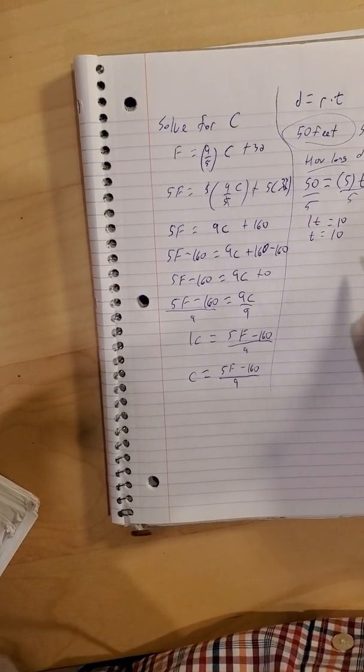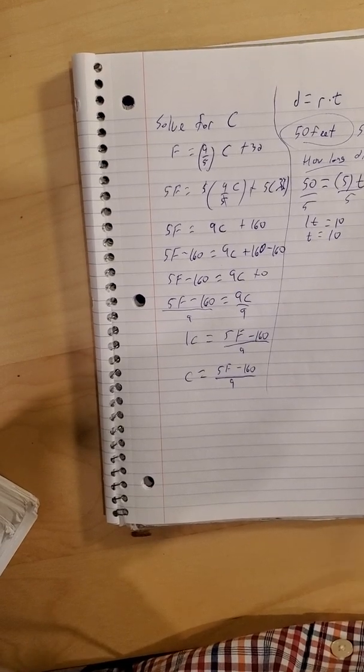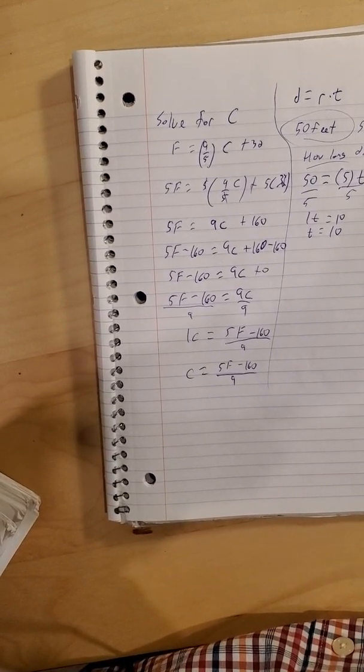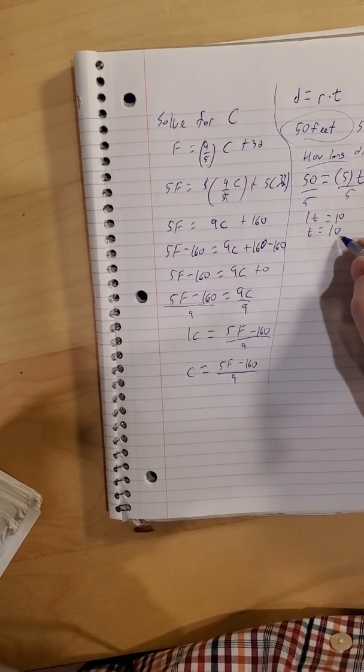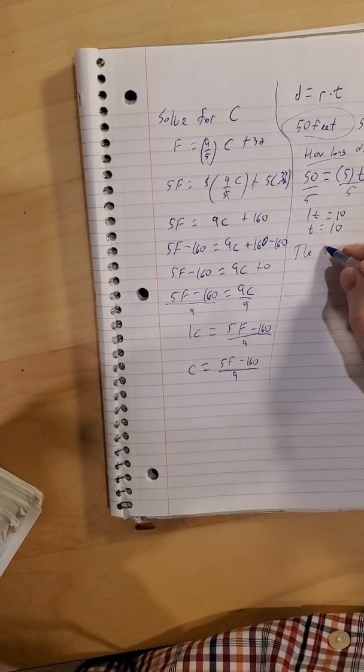And the units on the time are related to the units on your speed. So our speed was in per second, so this is measuring number of seconds. So the trip took 10 seconds.